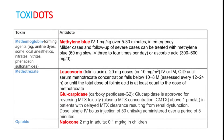Next is methemoglobinemia. Methemoglobin is a complication of many drugs including aniline dyes, local anesthetics, nitrates, nitrites, phenacetin, and sulfonamides. Methylene blue is the treatment of choice — 1 mg per kg body weight IV over 5 to 30 minutes.